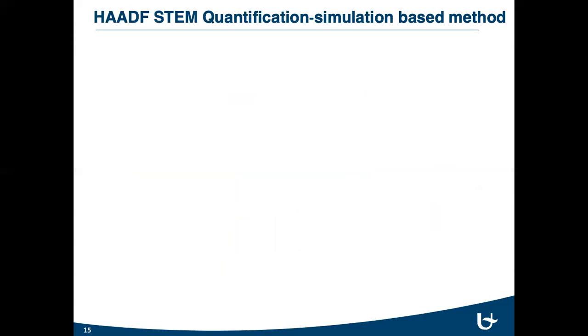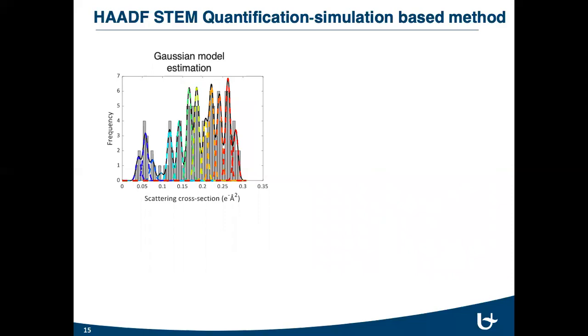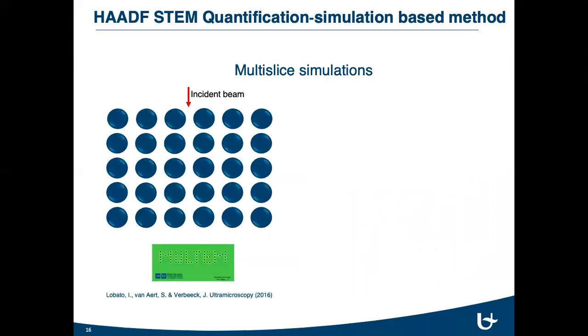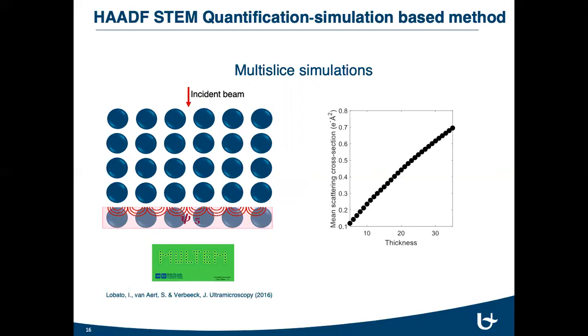In the simulation-based atom counting, the validity of the results is confirmed with the simulated values. To make an experimental estimation comparable with the simulated values, these scattering cross-section values firstly plotted. Then to obtain the reference scattering cross-section values, multi-slice simulations is used by Multam software, which was developed by Ivan Loboto. In multi-slice simulations, the three-dimensional atomic potential of specimen is divided into many slices along beam propagation direction. As such, each slice only modifies the phase of the electron wave. Then from the simulations, the reference scattering cross-section values with respect to thickness are obtained.